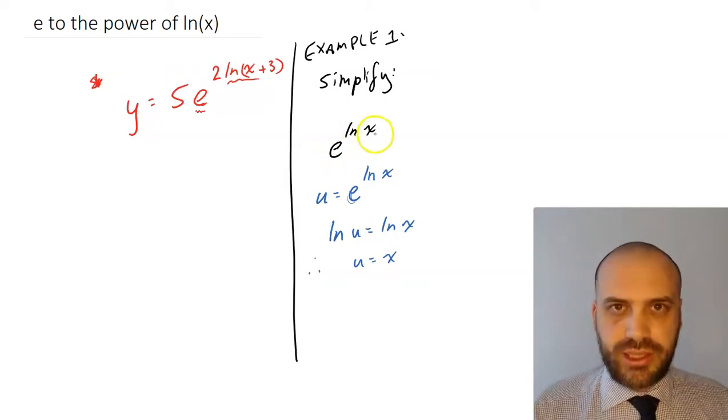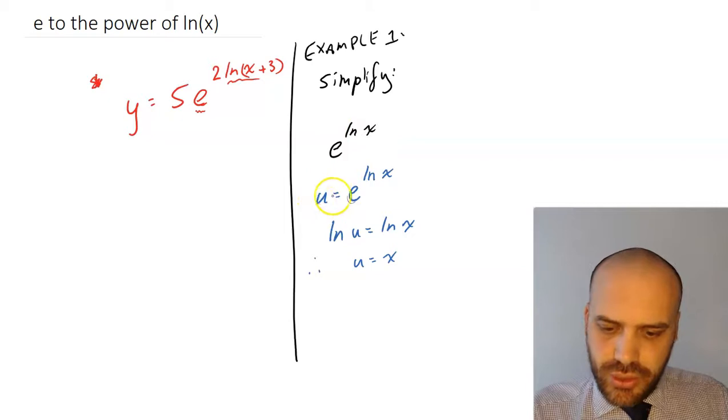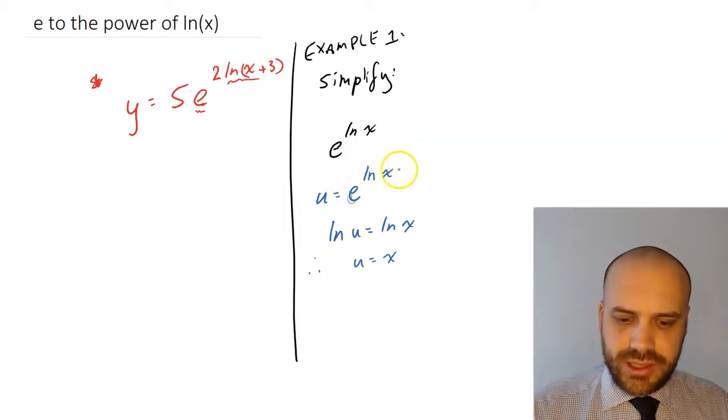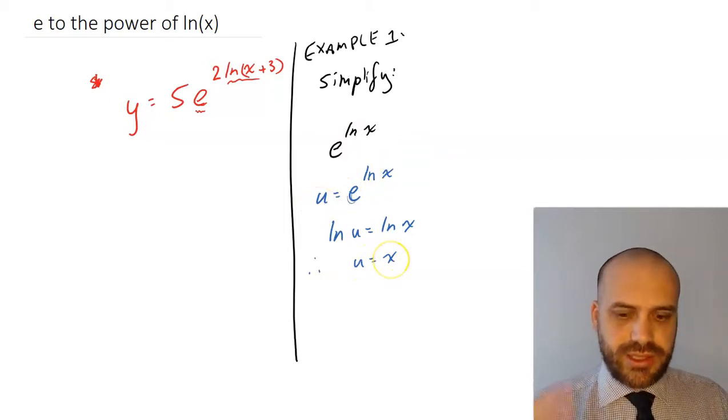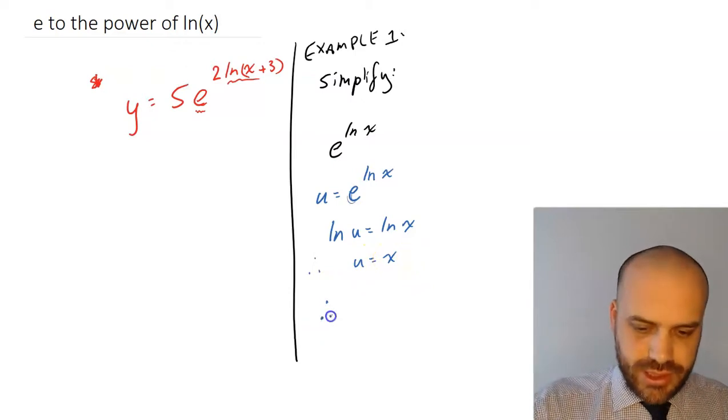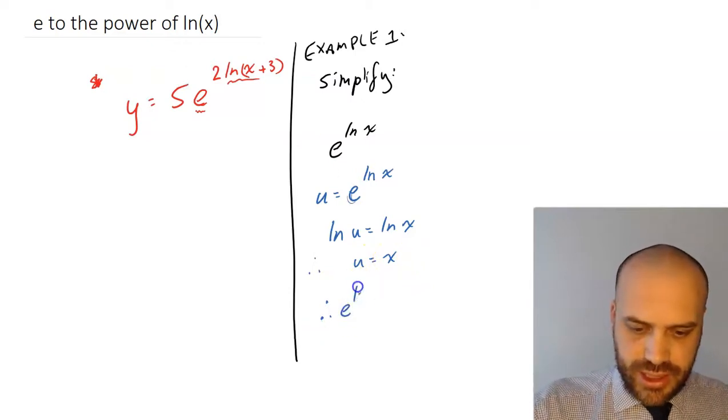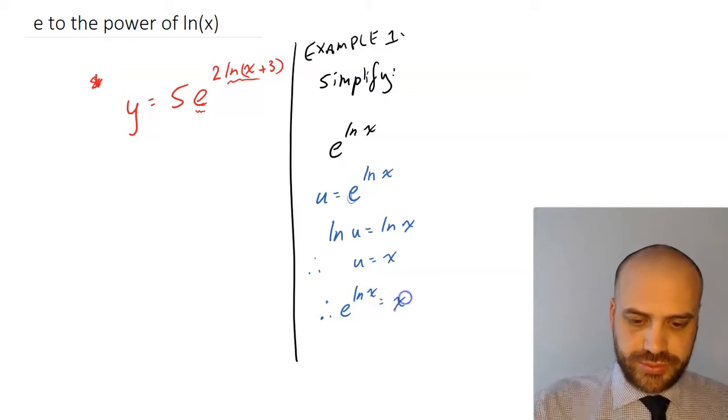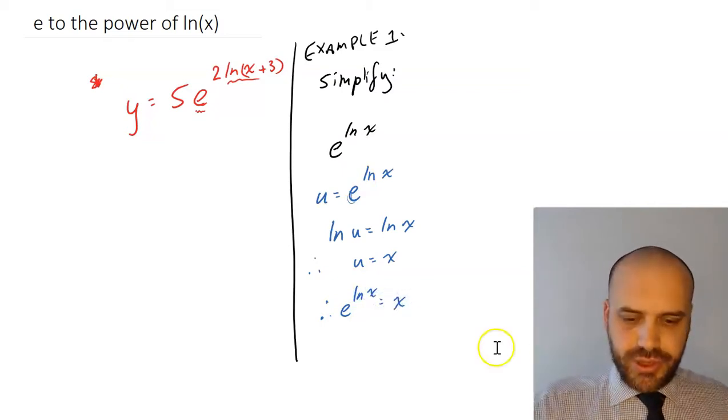Now, what were we doing again? We were simplifying e to the ln x. So I said that u is equal to e to the ln x. And then I figured out that u is equal to x.